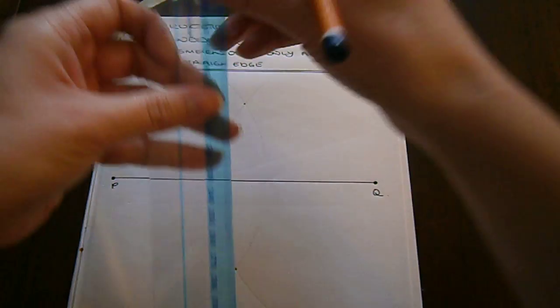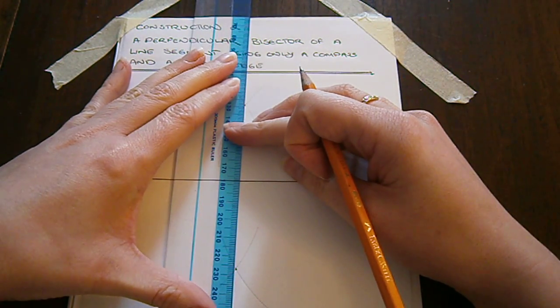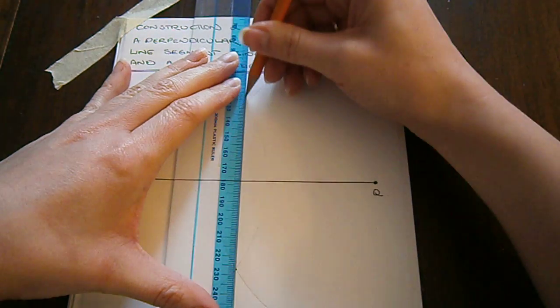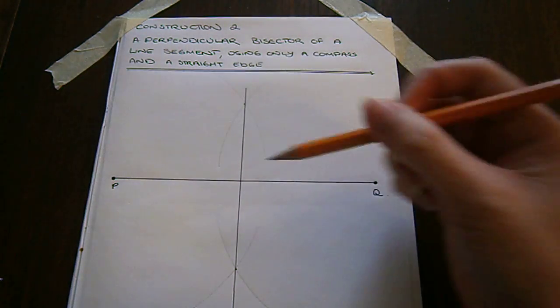We take our straight edge and draw a line between those two intersection points. This is now the perpendicular bisector of line PQ.